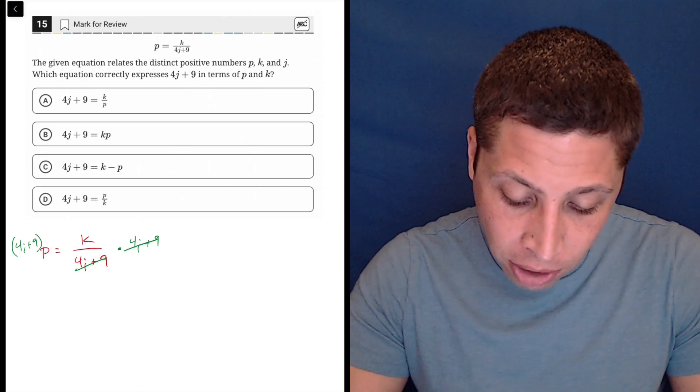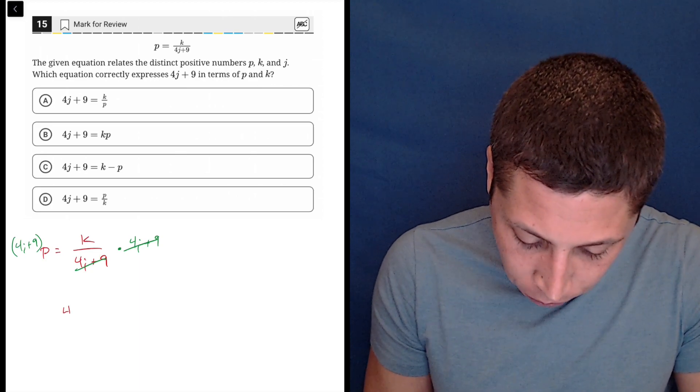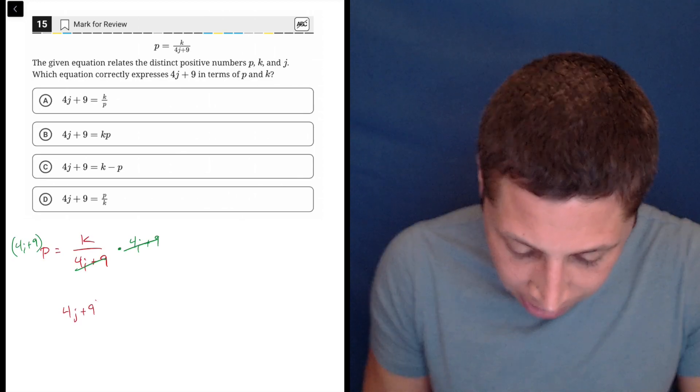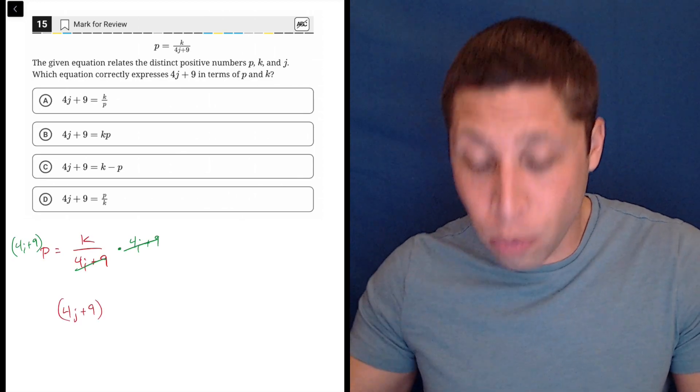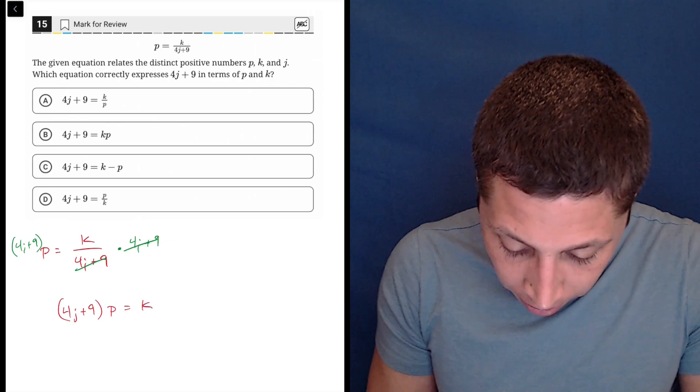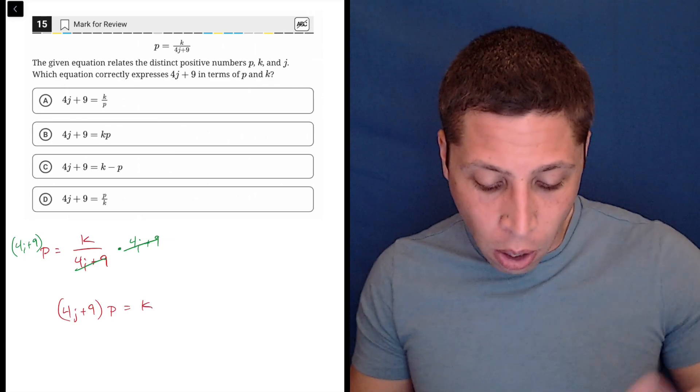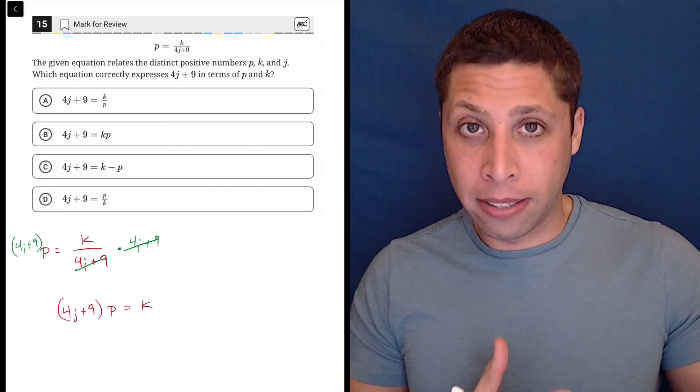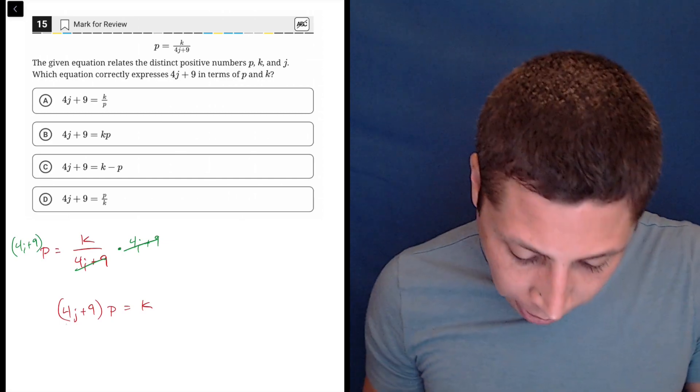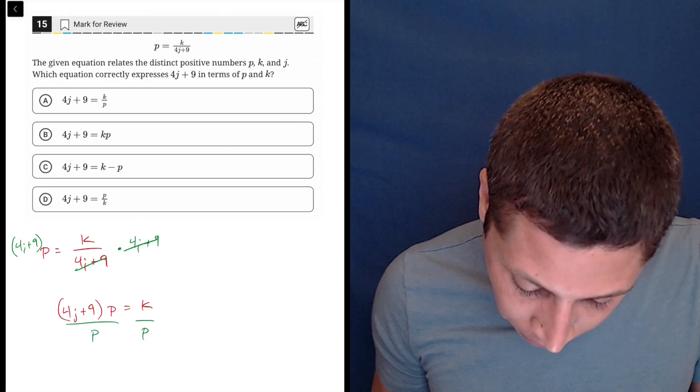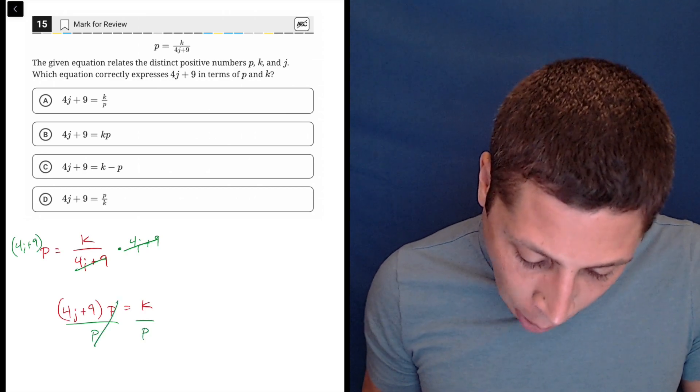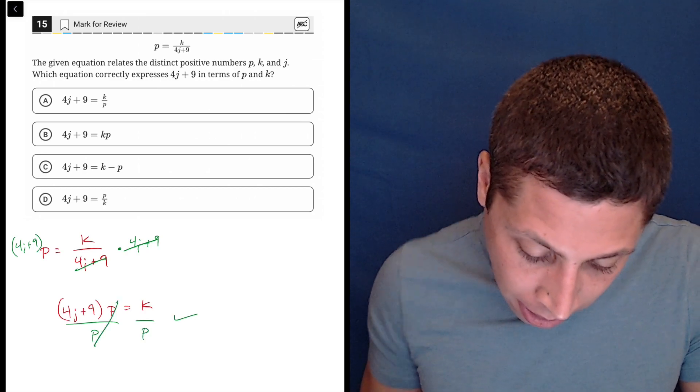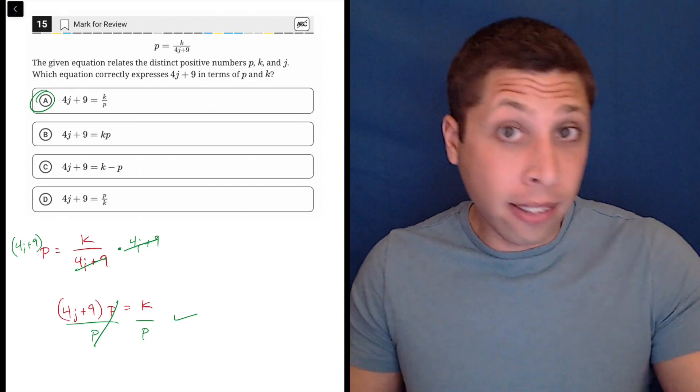So what I would do next is just rewrite this with the 4j plus 9 still as a unit, and then put that p there, and now we can hopefully see, okay, well, I don't need to mix the p in with the 4j plus 9. I just need to get the p out of there, and the way to do that is to divide by p. That will cross it out, and now we can see the k over p is choice A, and that is the answer.